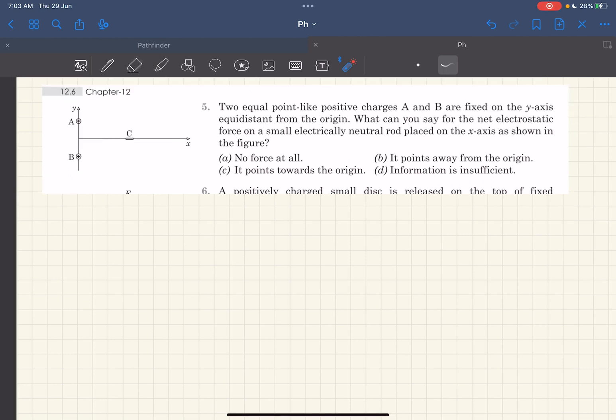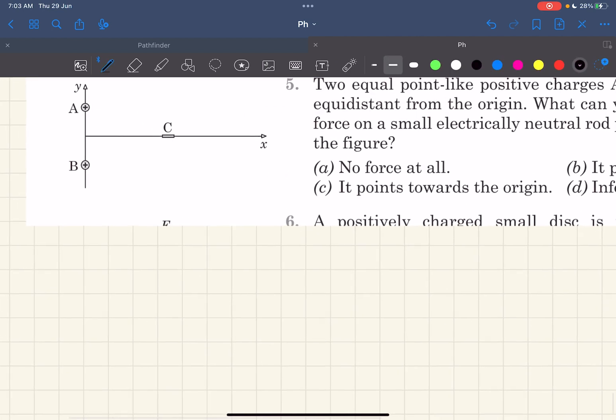In this problem, they have not given us the information as if this rod is close to the origin or is it very far away. We have no idea about that because the answer will vary depending upon that. So let's say if the rod was somewhere close to the origin. Now because of charge induction, negative charges will induce at this extreme end and positive charges will get induced at the other extreme end. Now the net charge will definitely be zero.